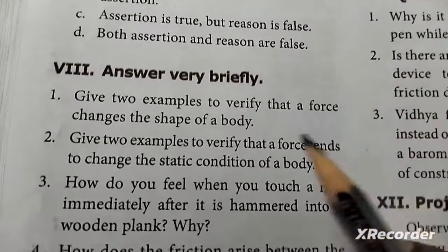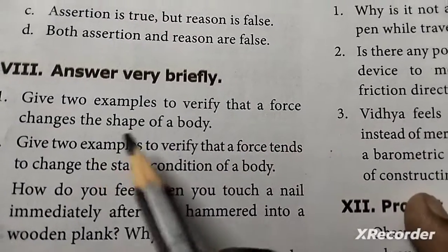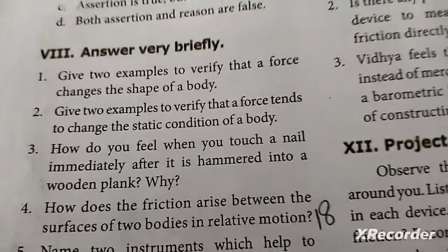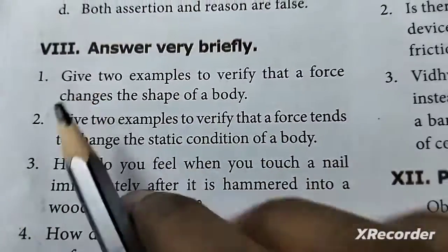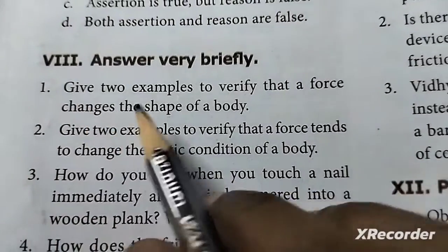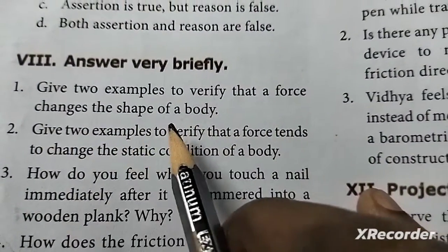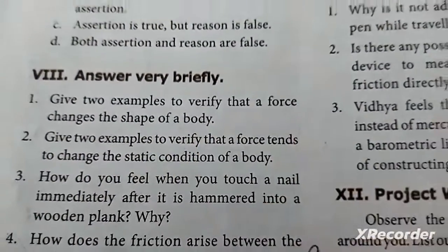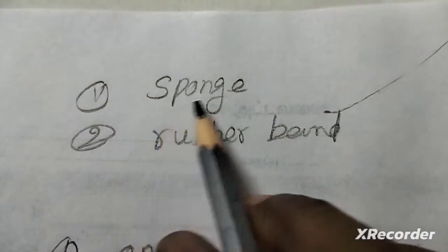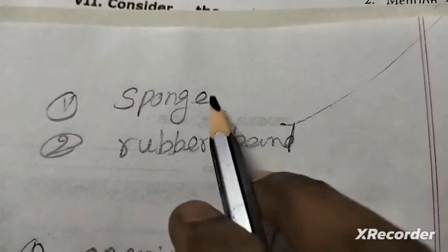Answer very briefly section. Give two examples to verify that a force changes the shape of a body — examples: sponge, rubber band.